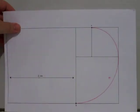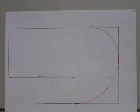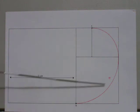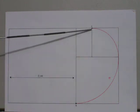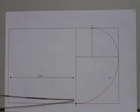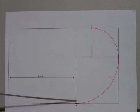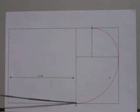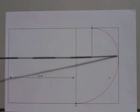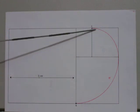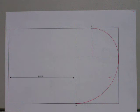Firstly we'll look at the Fibonacci spiral that is only two squares long. If this square here has the dimensions of 2, then the Fibonacci spiral from this point all the way around to this point comes to the length of pi — 3.1415.